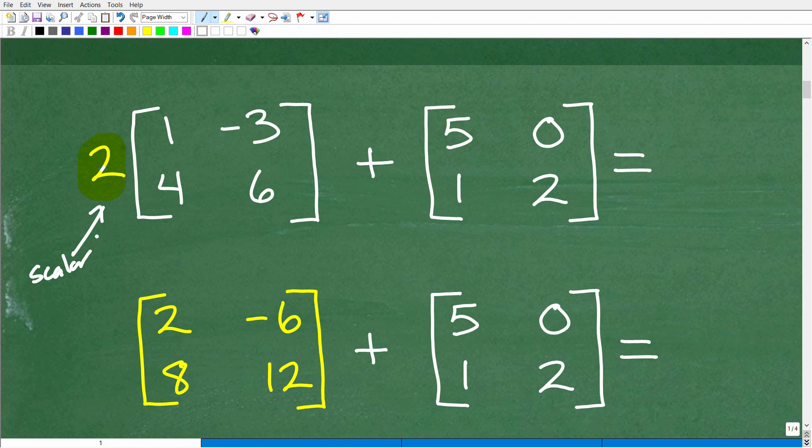So scalar multiplication, this is different than multiplying one matrix by another matrix. So when you study matrices, you've learned something about scalar multiplication. That's different than matrix multiplication. And scalar multiplication is super easy. It's basically like the distributive property. So we need to address this 2 times this matrix right here. So all we've got to do is literally take the 2 and multiply it by each respective entry in the matrix.